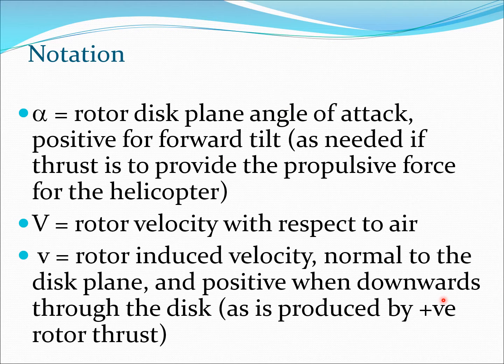Let us discuss some of these values in greater detail. If we look at the value alpha, it's the rotor disc plane angle which the cross section sees, and this is positive for forward tilt. As I have mentioned before, you need to tilt the rotor forward so that you generate a thrust and provide a propulsive force to this vehicle. Capital V is the rotor velocity with respect to air. Small v is the induced velocity induced by the rotor, and this is normal to the disc plane and positive when downward through the disc.